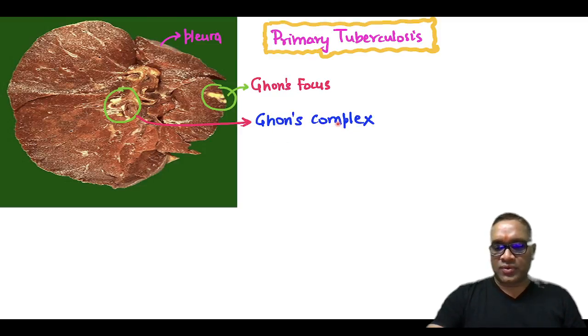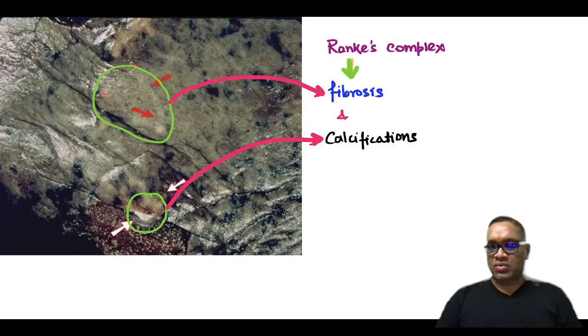And if you look at the pleural aspect, you can see there are areas of whitishness, that is the area of fibrosis and these are the calcium deposit calcification. So this is called Ranke's complex. So these are the primary TB sites.